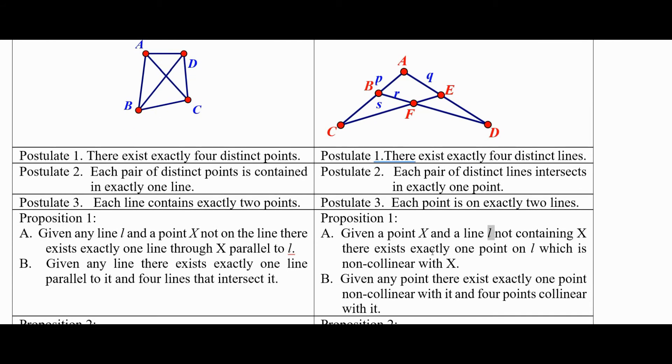Okay, over here, given any point, there's exactly one point non-collinear with it and four points collinear with it. So given point A, one point non-collinear, that's F, and these points here are collinear, and these are collinear.